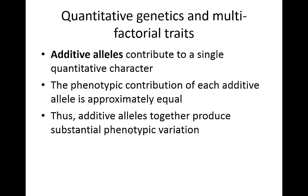Additive alleles are going to contribute to a single quantitative character, things like skin color. The more that you have of a particular type of allele, the darker the skin color is going to be. And the fewer that you have, the lighter your skin color is going to be. The phenotypic contribution of each additive allele is approximately equal, and when you add them all together, you can produce pretty substantial phenotypic variation.